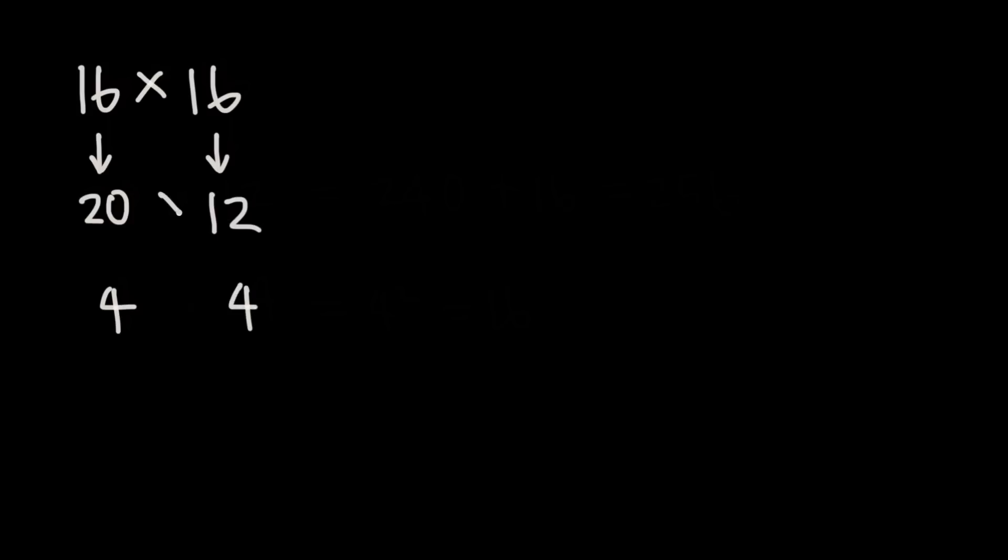Now 20 times 12 is our new multiplication problem which is much easier because we can ignore the 0 here and this is really just 2 times 12. 2 times 12 is 24 and then we just pop our 0 back on the end so 20 times 12 is 240.